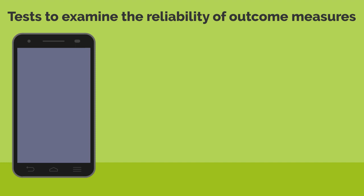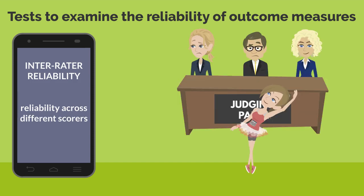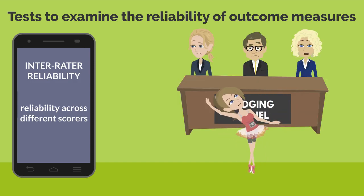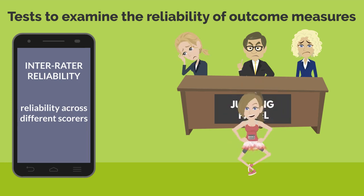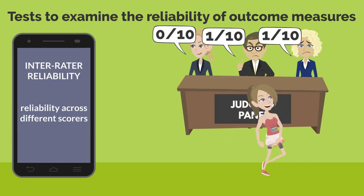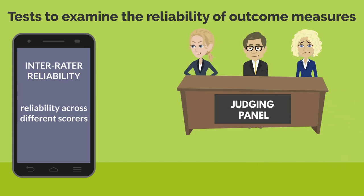One more test examines inter-rater reliability, which indexes reliability across different researchers or scorers — that is, the ability for the survey to provide reliable scores no matter who is scoring. A measure over positive 0.7 is considered acceptable inter-rater reliability. The best studies will use measures that have been validated as reliable by one of these methods.